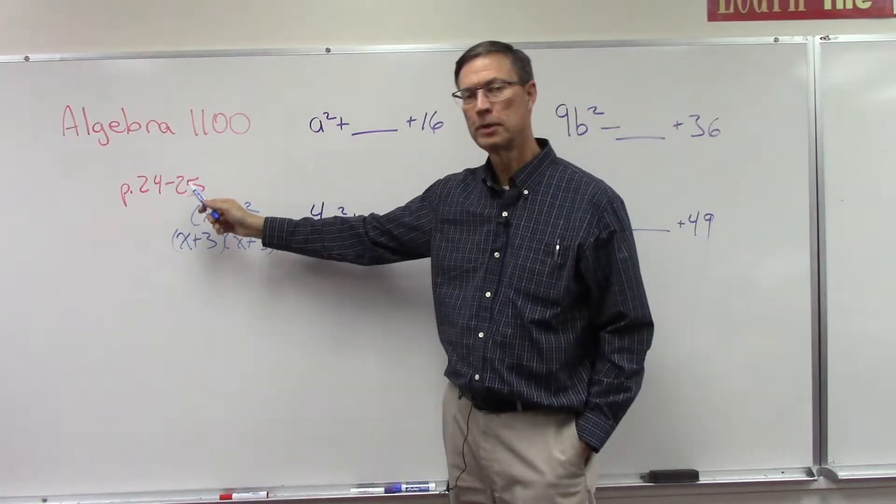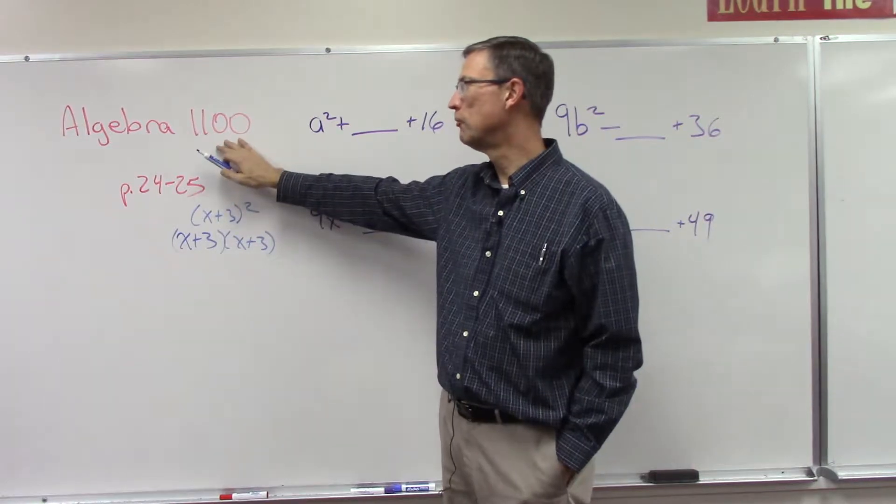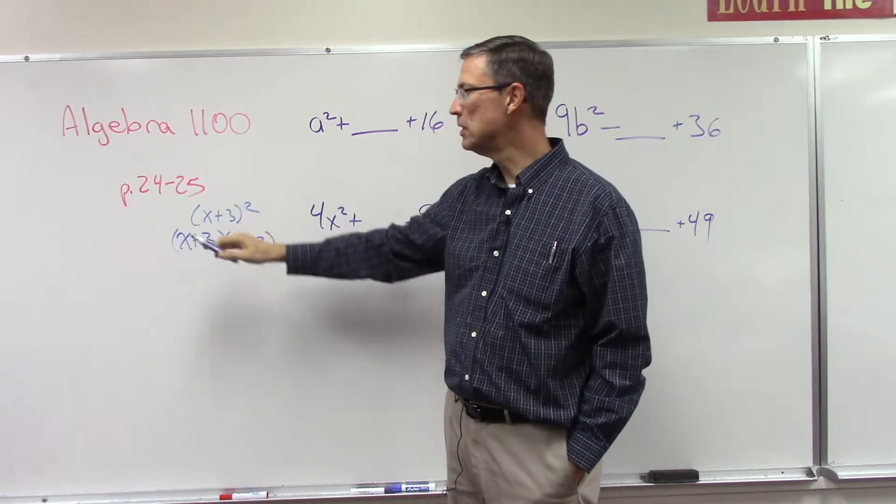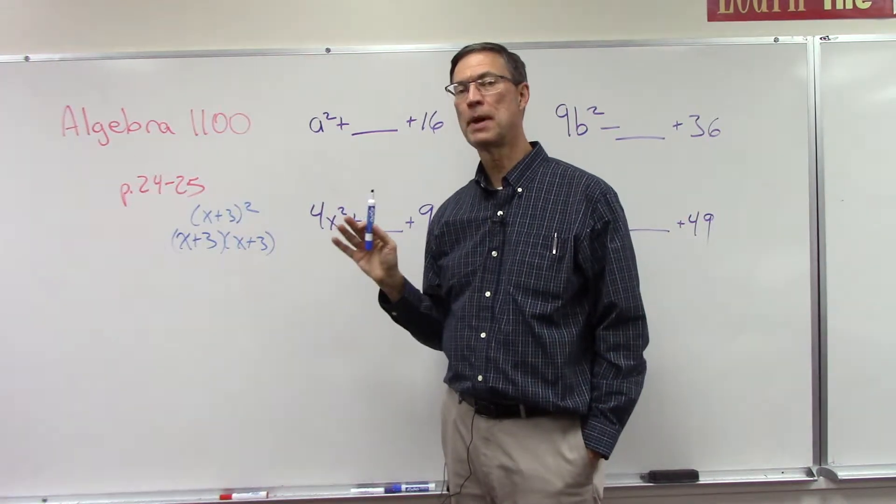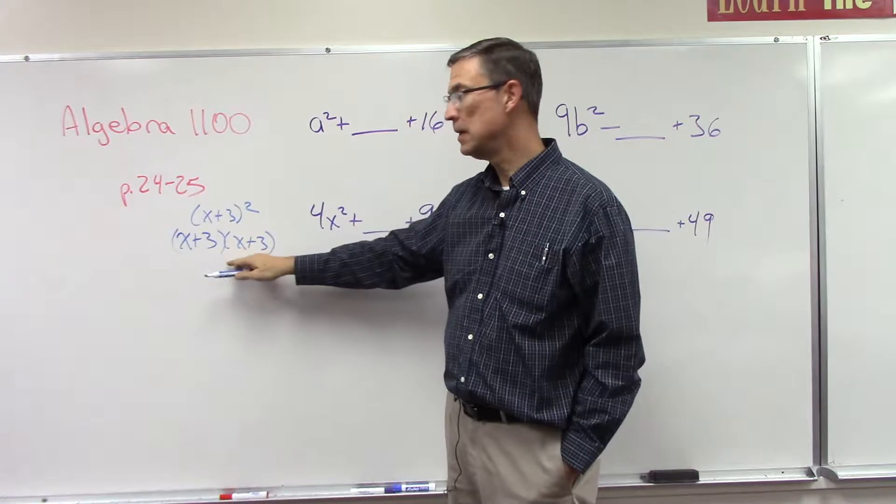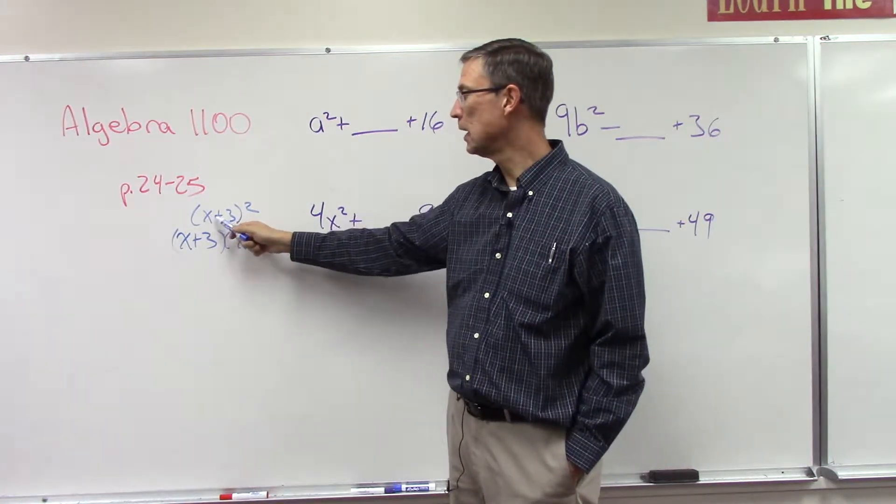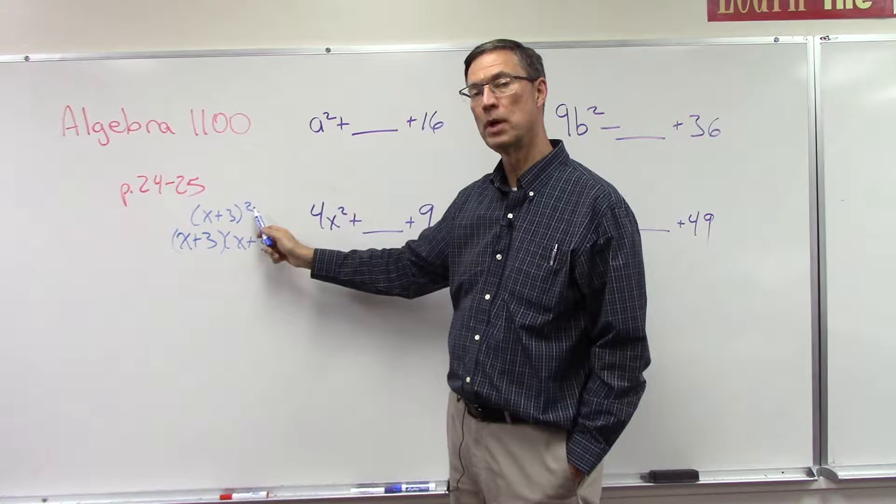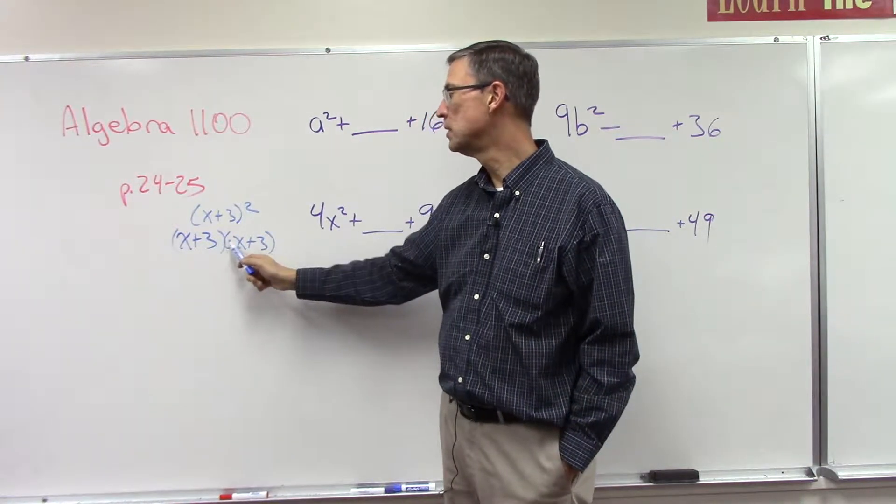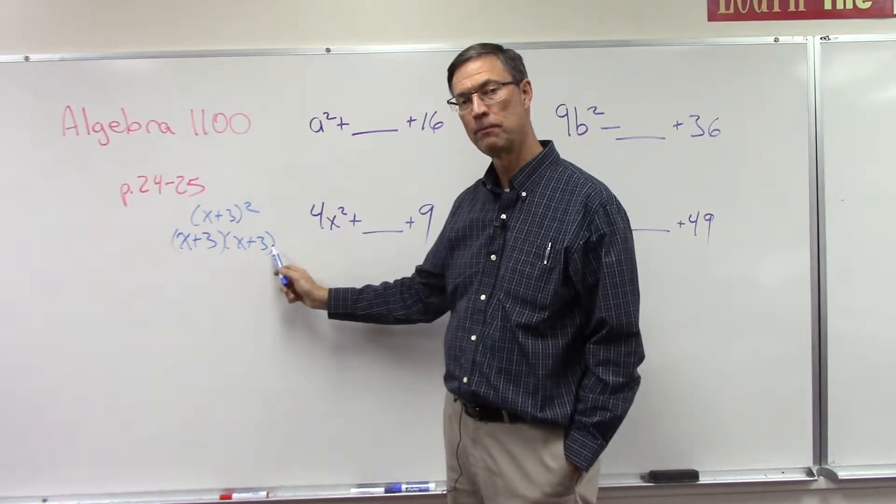We're getting close to another checkup, page 24 and 25 on the fourth algebra pace 1100. This is recognizing another special pattern, and we did a little bit of this type earlier in the pace where we had something like x plus three, the quantity squared, and we multiply out x plus three times itself.